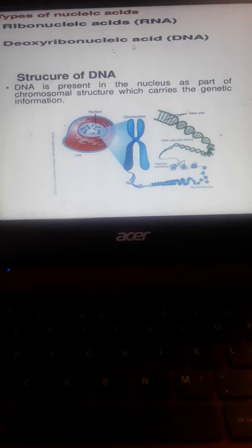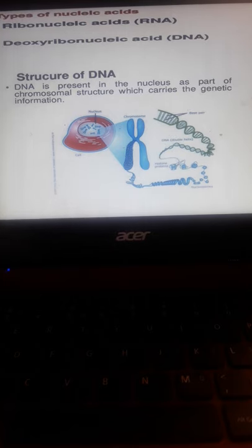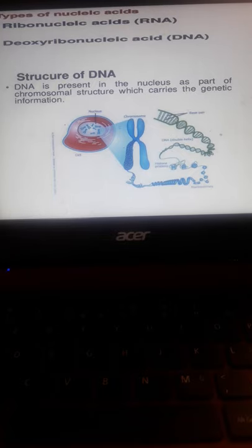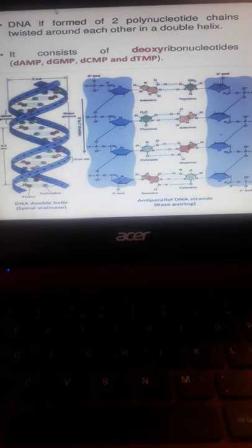Types of nucleic acids: we have ribonucleic acids and deoxyribonucleic acid. The structure: when you say DNA, most of you are familiar already. It is present in the nucleus as part of the chromosomal structure which carries the genetic information. There is the deoxyribonucleic acid or DNA. The difference between the two is just that deoxy has no hydroxyl group, while ribonucleic has it. Usually the structure of the nucleus has DNA located there, the structure of DNA, because it carries the genetic material or genetic information needed for protein synthesis.